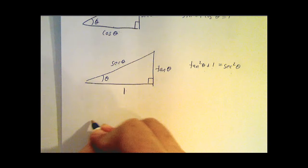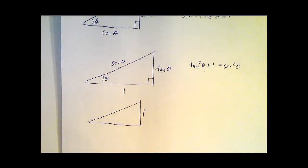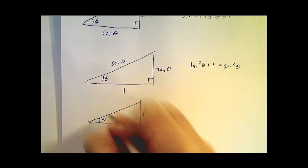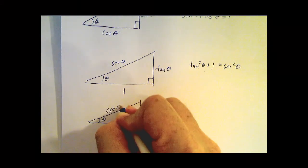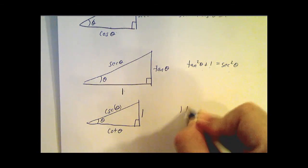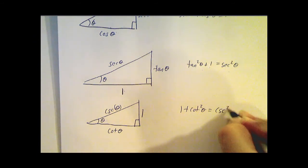And the last one is what happens if this side is 1? Then this winds up being the cotangent of theta, and this winds up being the cosecant of theta. So you get 1 plus the cotangent squared of theta equals the cosecant squared of theta.